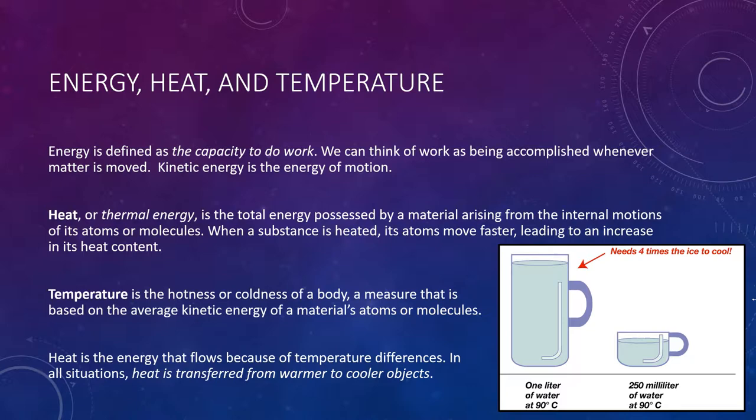If two objects of different temperature are in contact, the warmer object will become cooler, and the cooler object will become warmer until they both reach the same temperature. Consider two different size containers of water that are both at the same temperature of 90 degrees Celsius. The liter of water contains more internal energy because it will require more ice cubes to cool it, so there's more heat.